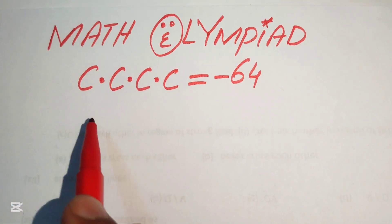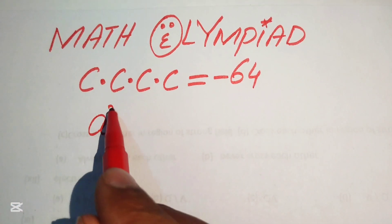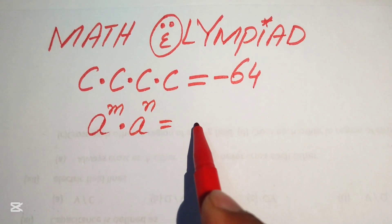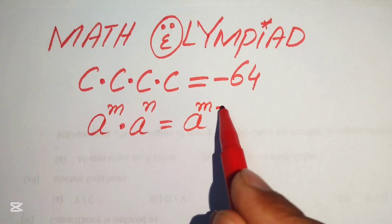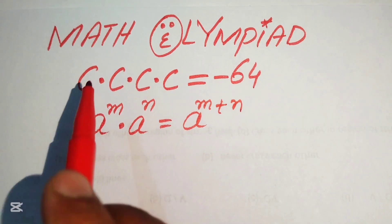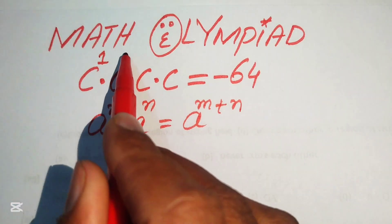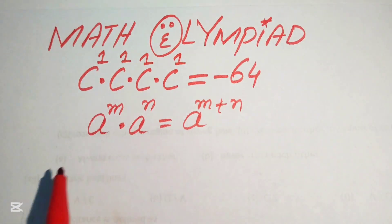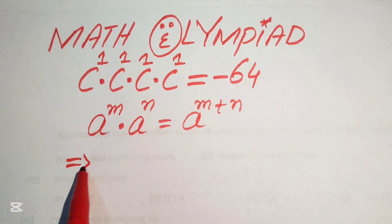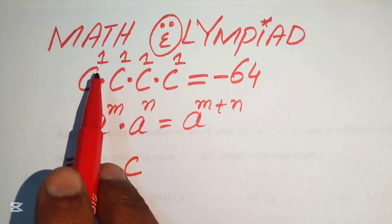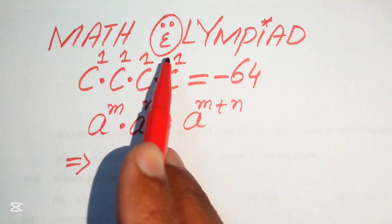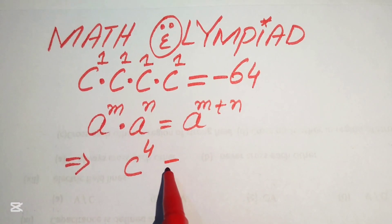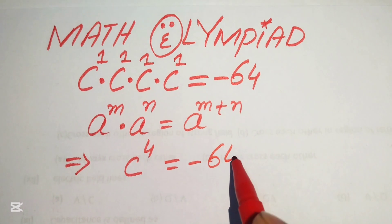We can apply the exponent law: a to the power of m multiplied by a to the power of n equals a to the power of m plus n. All the c's have exponent 1, so we add the exponents: 1 plus 1 plus 1 plus 1 gives us c to the power of 4 equals minus 64.